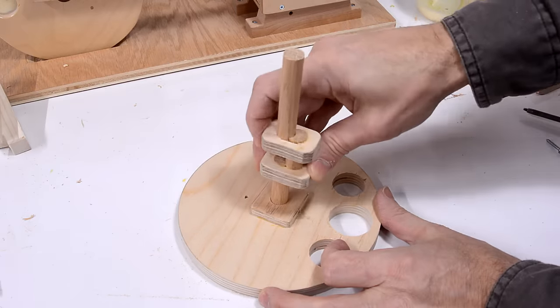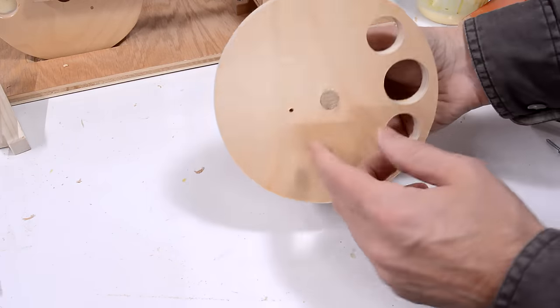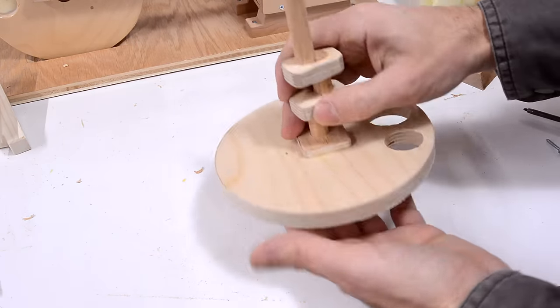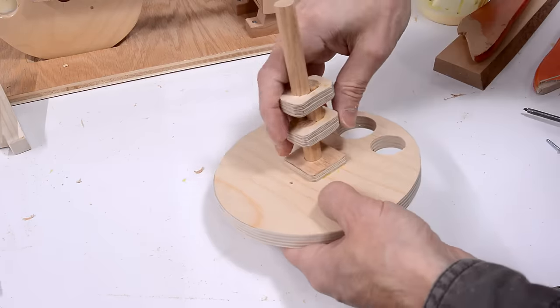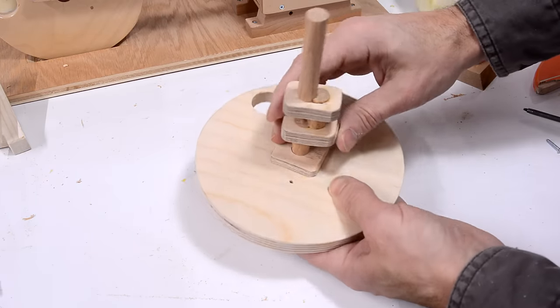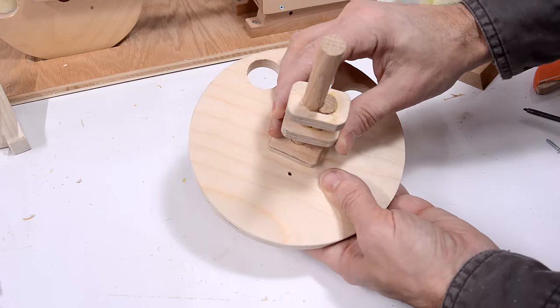When mounting these together, the cranks need to be offset by 90 degrees. So, one crank is here, and then this crank needs to be 90 degrees offset so that the control valve is in the right phase.